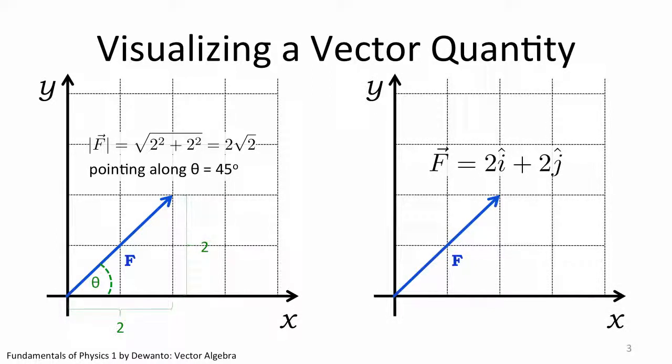We can also describe the vector through its components. It is obvious that the vector spans over two units along positive x-axis and two units along positive y-axis. So we write F is equal to 2i-hat plus 2j-hat. Now, this is probably something new to you guys. What is this i-hat and j-hat?